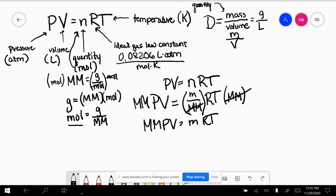Now I've got mass. Let's divide each side by volume so that we can isolate density here. So this becomes molar mass times pressure equals mass over volume times RT.